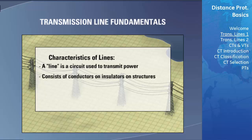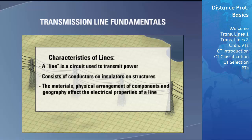Transmission lines consist of conductors that are supported by a structure to hold the conductors high above the ground. These conductors are connected to the structure using devices called insulators, which ensure there is no electrical connection between the conductors and the supporting structure. The material used in the structure, the physical arrangement of the components, and the geography that the conductors and towers are located in greatly affect the electrical properties of the line. All of these factors must be considered when determining the best method of protecting the transmission line.